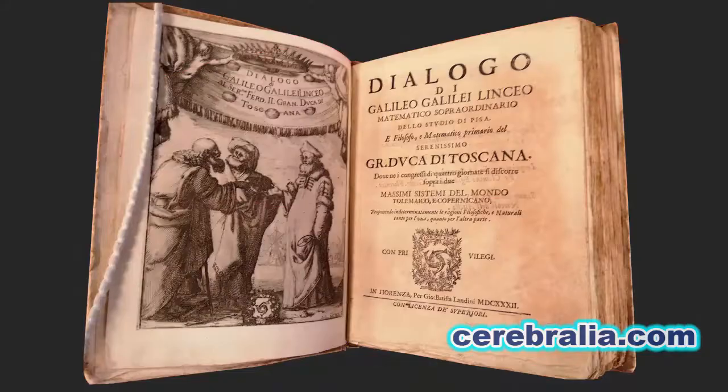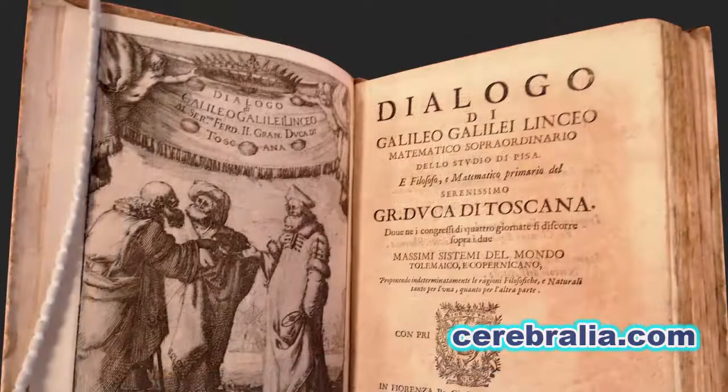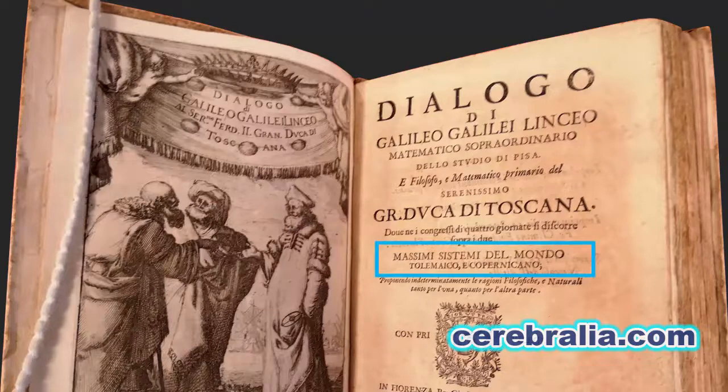Galileo shared his knowledge in a book called Dialogue concerning the two chief world systems, where he defended Copernicus' ideas.